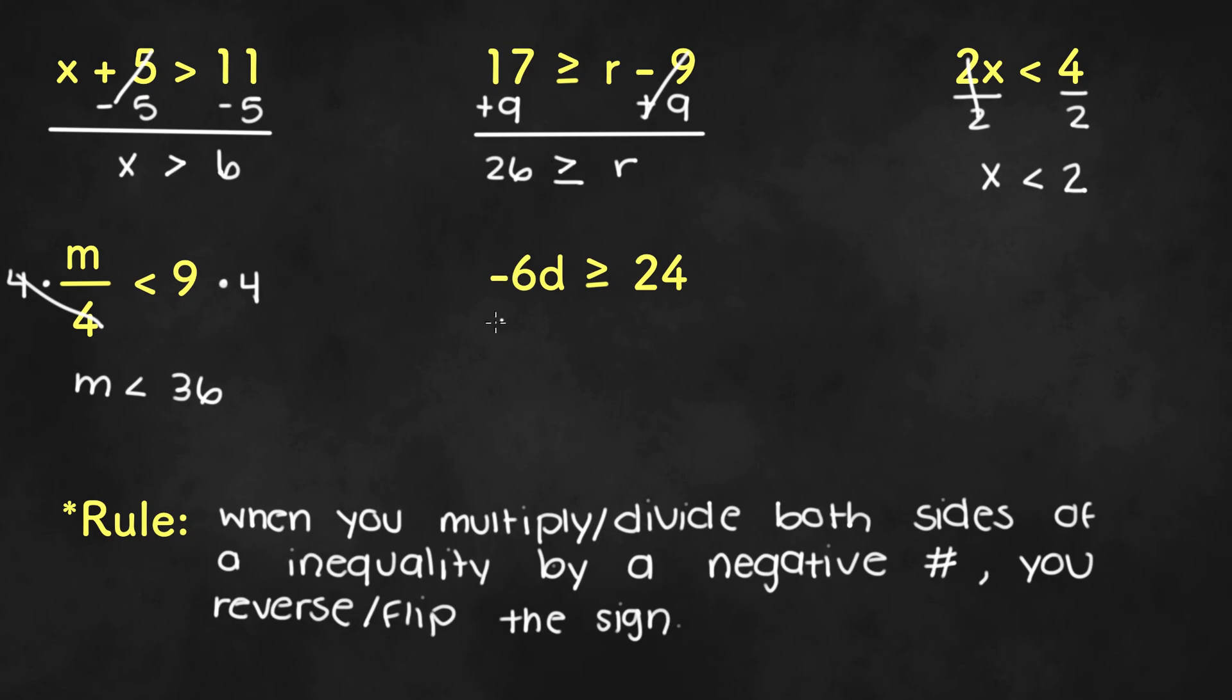Here we are going to divide by negative 6 to isolate d. If we do that, we have d, and on the other side we'll have 24 divided by negative 6 or negative 4. Now it says that you have to reverse or flip the sign. So what that means is since we have greater than or equal to, it's going to be less than or equal to.